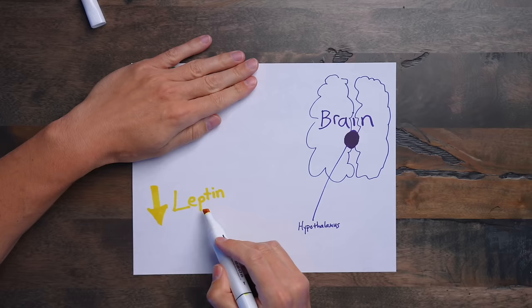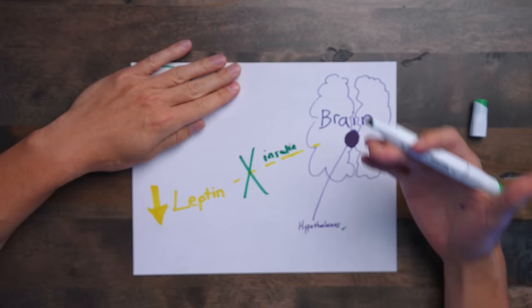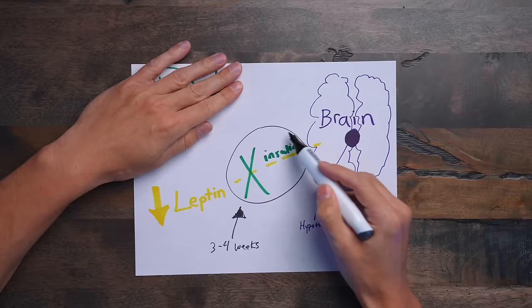And when those leptin levels are low from not eating, it's going to travel to the brain, specifically the hypothalamus part of the brain, and say, hey man, you are not full, you are hungry. Insulin actually blocks or partially blocks that leptin signaling, which ultimately results in you being less and less hungry. But to get to this point, it's going to take you about three to four weeks of doing intermittent fasting and/or switching from a processed food diet to an unprocessed food diet.